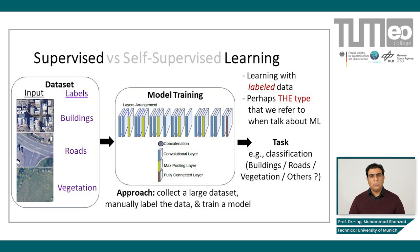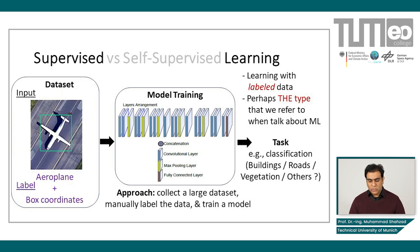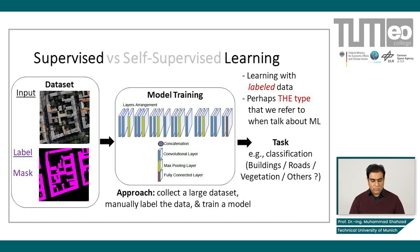Supervised learning is learning with labeled data — perhaps the most common type we refer to when we talk about machine learning. The approach is to collect a large dataset, manually label it, and train a model using that training data. For example, on the left you can see images as input data, and the labels could be classification labels — for example, this image belongs to buildings, this image belongs to roads, or this image belongs to vegetation. This is one particular type of label belonging to the classification application of machine learning.